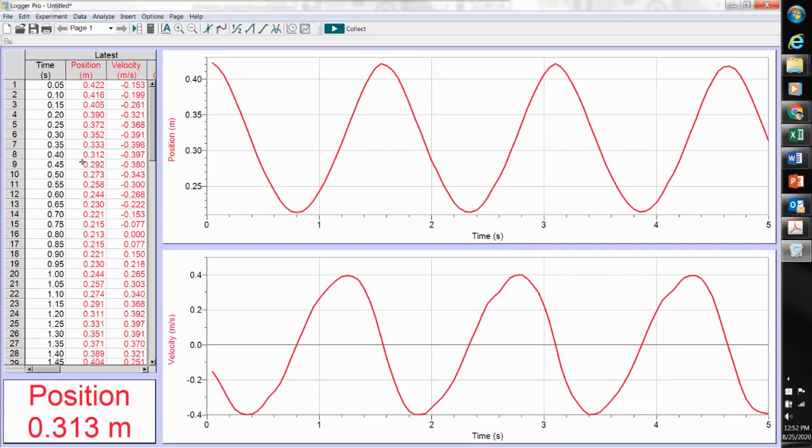And over here we see raw data. As the time goes on, we can see the values for our position in meters away from the sensor and our velocity in meters per second. Notice that there are negative signs and positive signs for moving away from and toward the sensor.